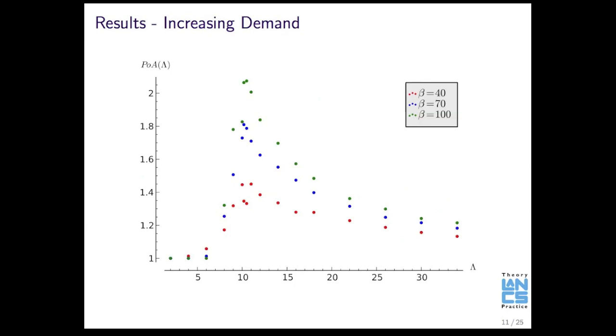So, I solved this model for various parameters. What we got here is the price of anarchy graphed against the demand. So, as the demand for service increases. And what we graphed, it was for various values of this cost of balking. And what you see is this pattern here where we have this high price of anarchy at a certain amount of demand.